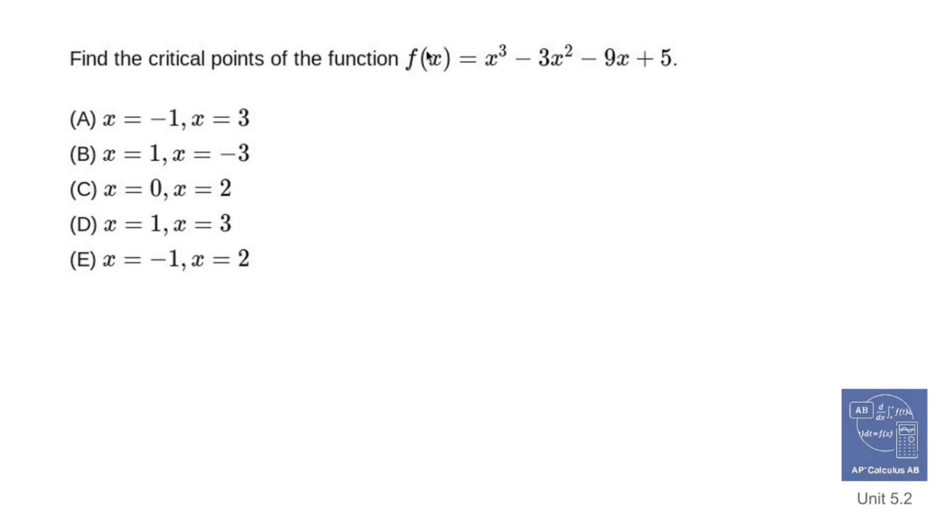Find the critical points of the function f(x) equals x cubed minus 3x squared minus 9x plus 5. Critical points exist when f prime of x equals 0. So what I have to do is find out what f prime of x is and then set it equal to 0.